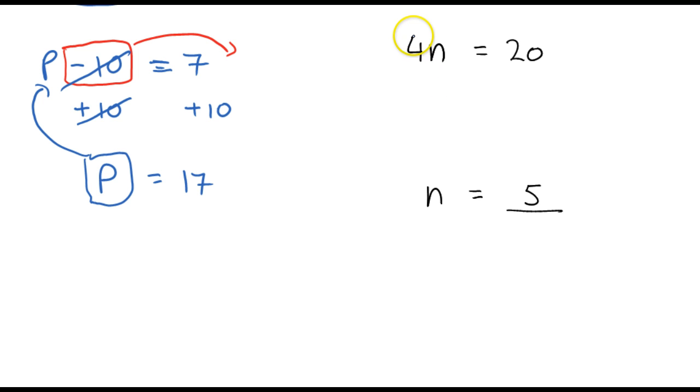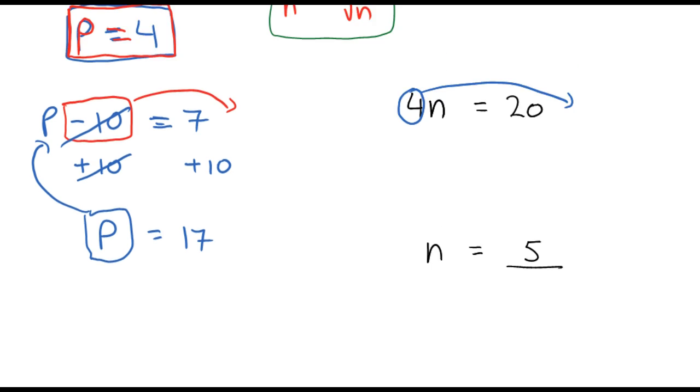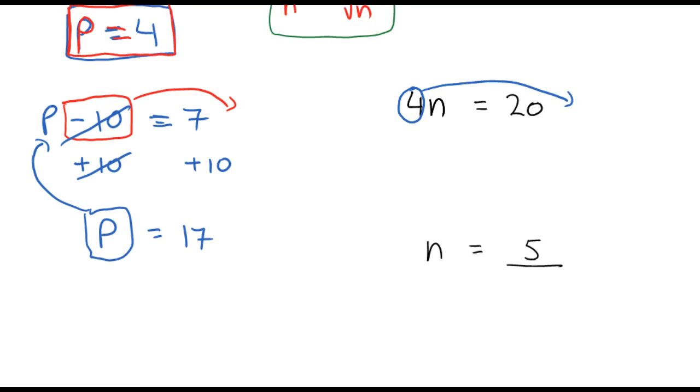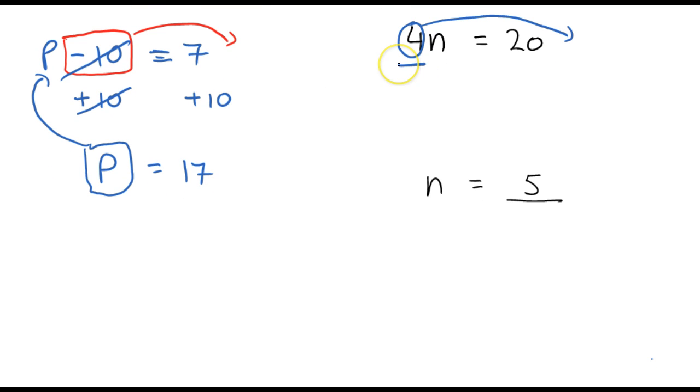But let's use our opposite operation method to solve for n. So, this 4 here is in our way. I need to get it over here. So, I'm going to look at the operation between the 4 and the n, and that's multiplication. So, I'm going to do the opposite. And the opposite of multiplying is dividing here. So, I'm going to divide by 4. And whatever you do to one side, you have to do to the other side. And there it is. 4 divided by 4 is going to be 1. So, I'm going to get rid of that. And 20 divided by 4 is going to be 5. And that is how you get n by itself.